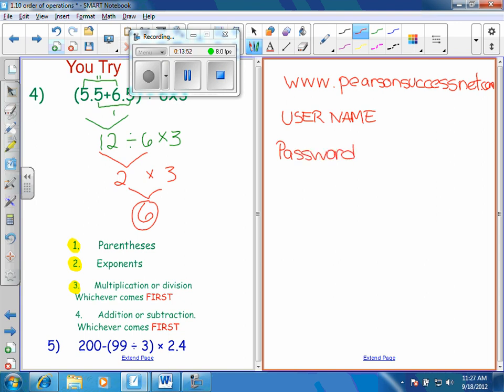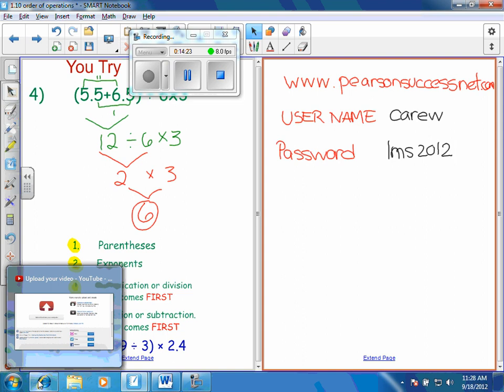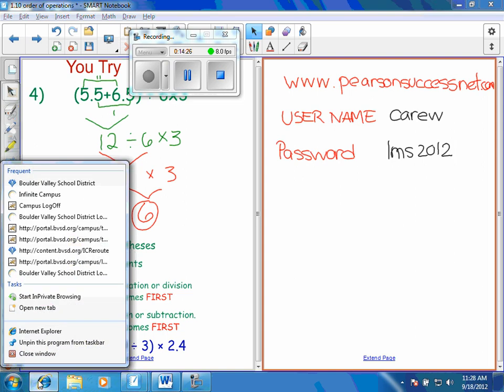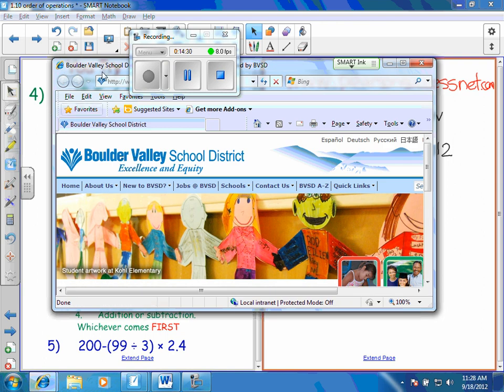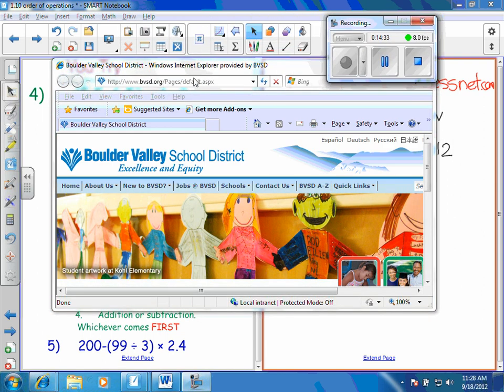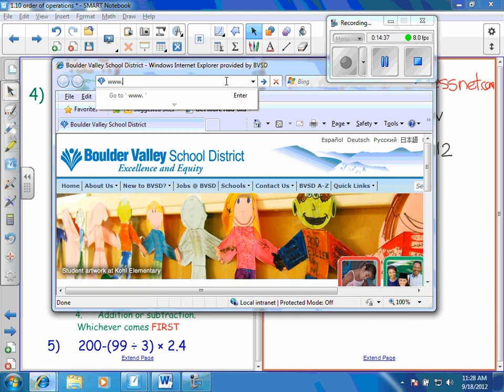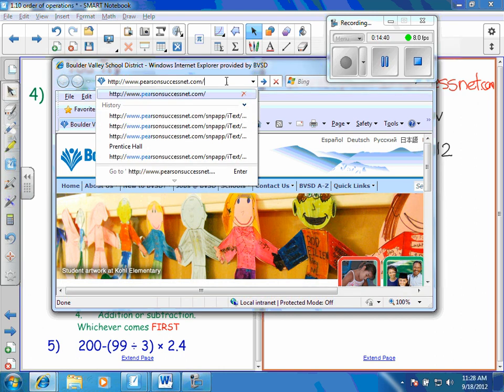So you're going to log on by typing in www.pearsonsuccess.net, all one word, .com. And when you do that, you're going to see username. And you're going to see password. I'll also leave this on the board. Up here, you can see it's up there. The username is Karu, my name, and the password is LMS for Louisville Middle School, 2012, all lowercase.